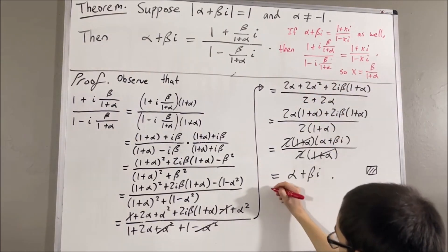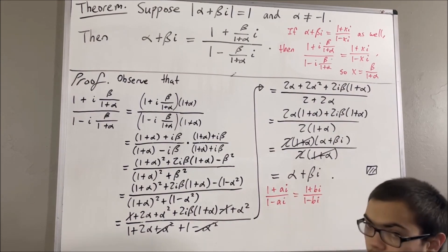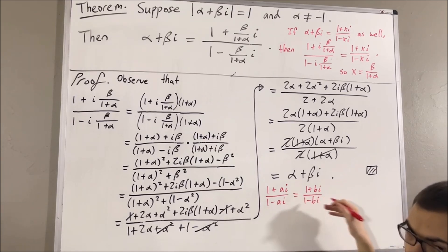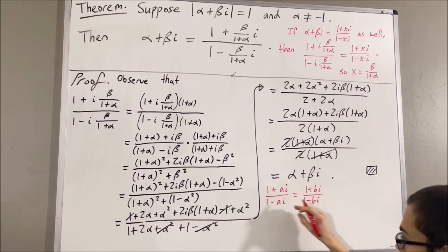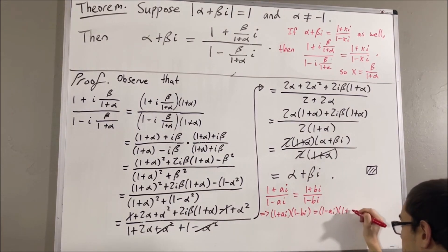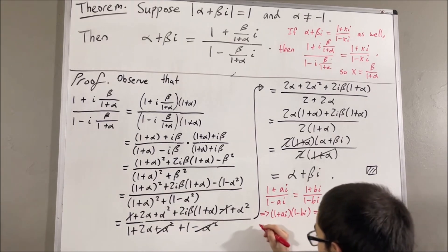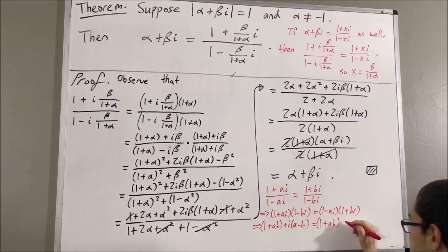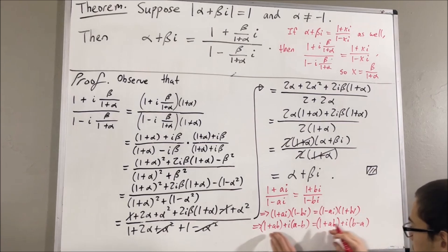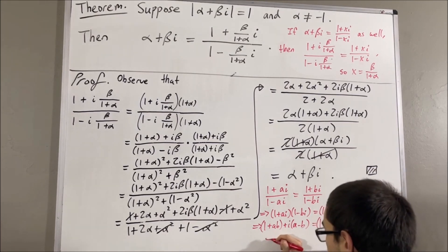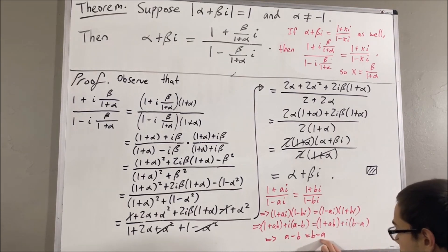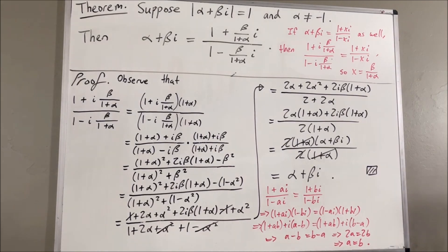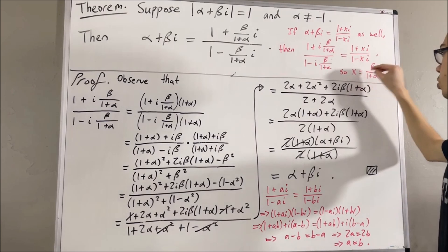In general, if we have the following situation: if a and b are real numbers such that 1 plus ai over 1 minus ai is equal to 1 plus bi over 1 minus bi, it will follow that a is equal to b. We can verify this first by cross-multiplying. If we expand the left-hand side, we get this. And, on the right-hand side, if we expand it out, we get this. I've grouped together the real parts and the imaginary parts. Well, if we set the imaginary parts equal to each other, we get this. But then, you just add b to the other side, add a to the other side, you get 2a equals 2b, and that implies a is equal to b. And, so that's why, if these two expressions are equal, we have x is equal to beta over 1 plus alpha.